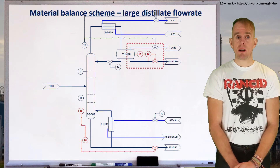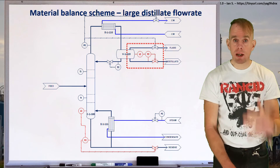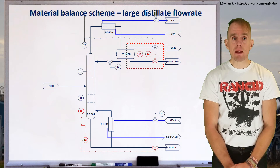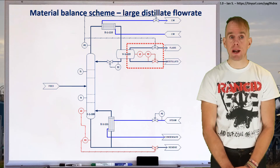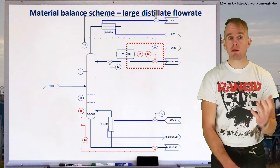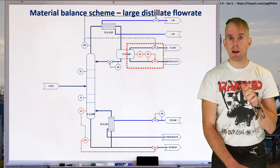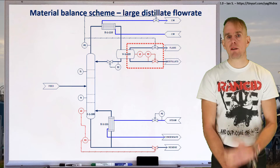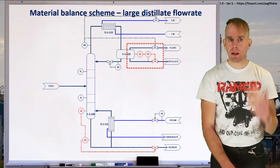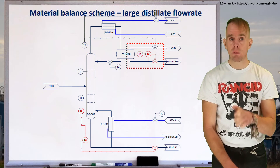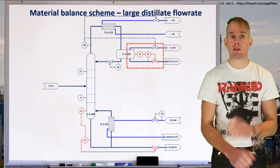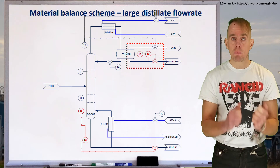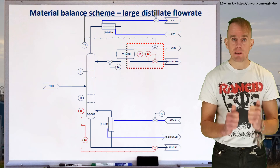If we've got a large distillate flow, we don't change what's happening in the base of the column at all — we keep the level control on the sump cascaded onto the residue flow rate. The dashed red box shows what has changed. If we've got a large distillate flow rate, we simply swap the control onto the flow that's going to be the most sensitive — the larger flow is the easiest to control. Now I have my level controller for the reflux drum cascaded onto the flow controller for the distillate outlet, and the reflux ratio is set by knowledge of that distillate flow, with the reflux return flow controller operating on whatever ratio is elected.